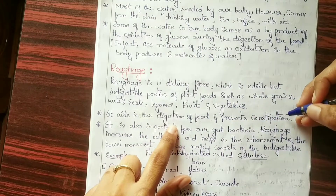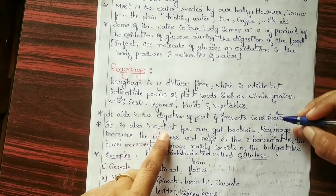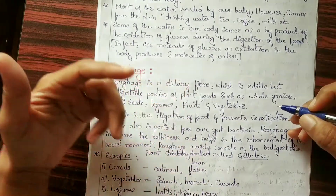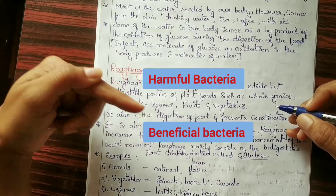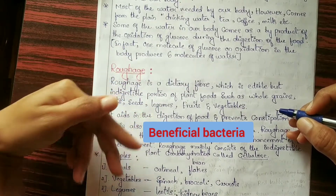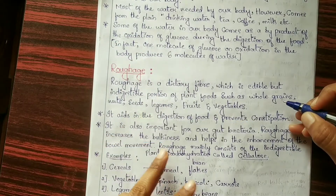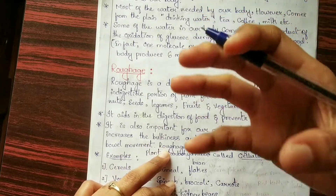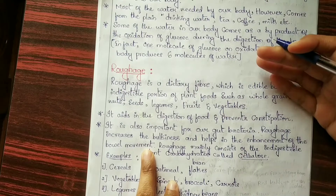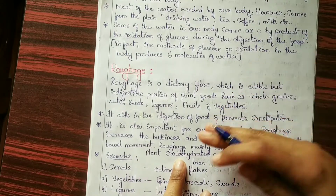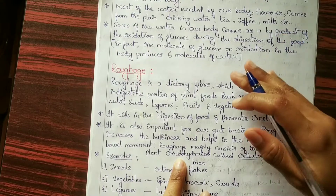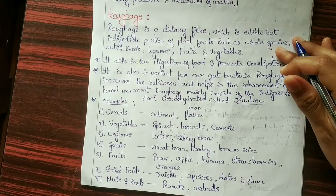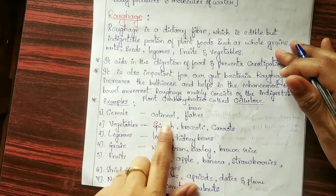The functions of roughage are: it aids in the digestion of food and prevents constipation. It is also important for our gut bacteria — there are different types of bacteria, both harmful and beneficial, and roughage is very important for beneficial bacteria. Roughage increases the bulk and bulkiness of food, which in turn helps in the enhancement of bowel movement. Roughage mainly consists of indigestible plant carbohydrates like cellulose.